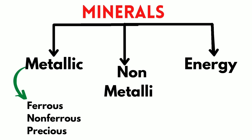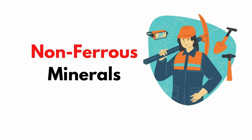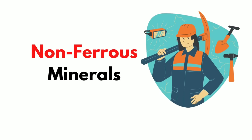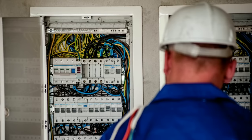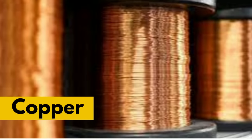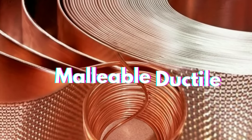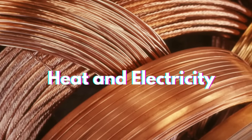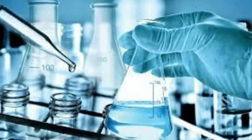Now let's talk about the other type of mineral — non-ferrous mineral. As the name suggests, this does not contain iron concentration. Examples include copper, bauxite, lead, zinc, and gold. These minerals play a very important role in the metallurgical, engineering, and electrical industries. Copper has features like being malleable, ductile, and a good conductor of heat and electricity. This mineral is very important in electrical cables and the electronic and chemical industry.